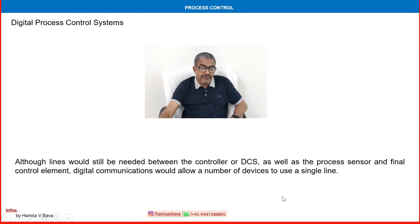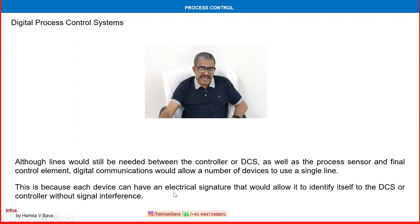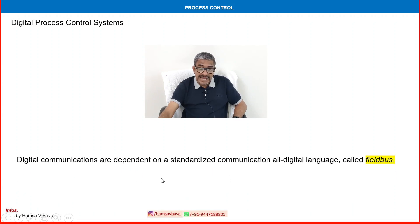Although lines would still be needed between the controller or DCS, the process sensors, and the final control element, digital communication allows a number of devices to share a single line. Each device can have an electrical signal that identifies itself to the DCS or controller without signal interference. Digital communications depend on a standardized communication language called fieldbus.